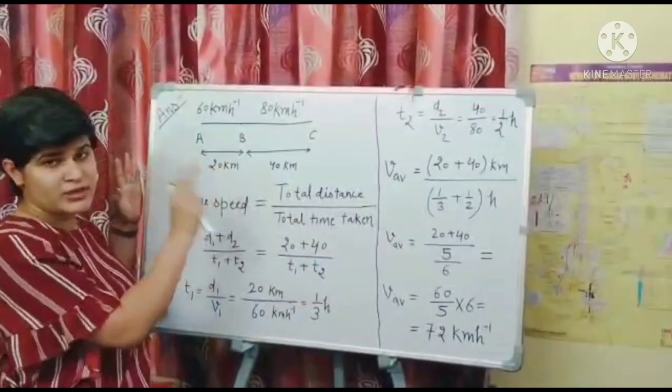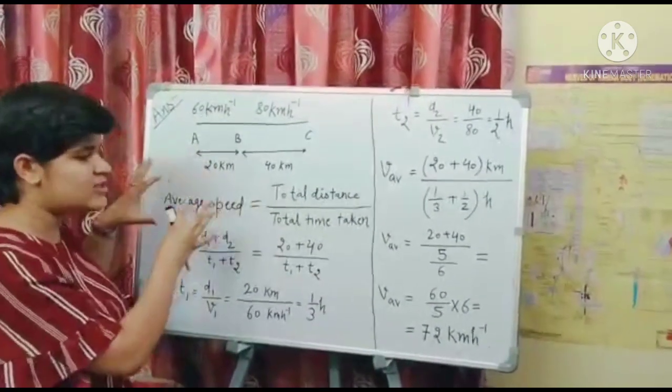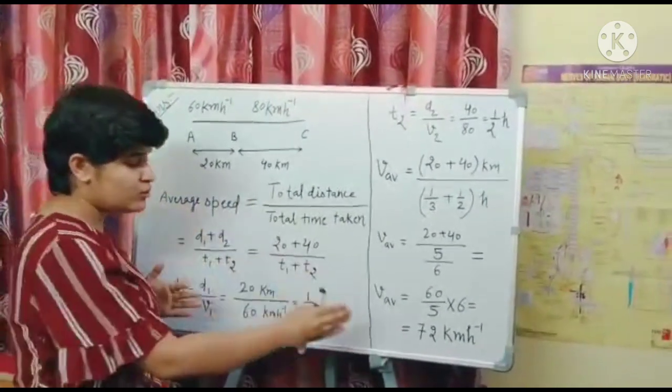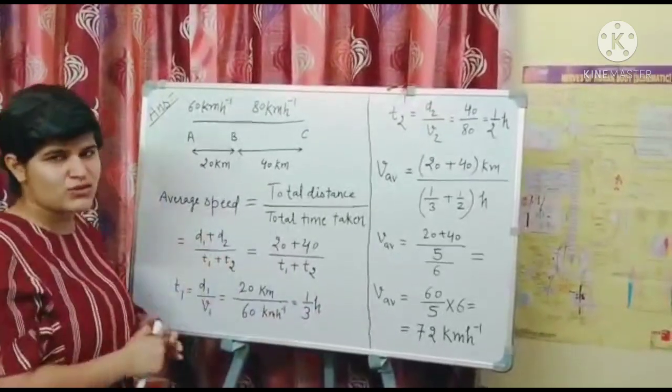The train was travelling with 2 different speeds, 60 km per hour and 80 km per hour. But the average speed of this train came to be 72 km per hour. This was our concept. Thanks for watching.